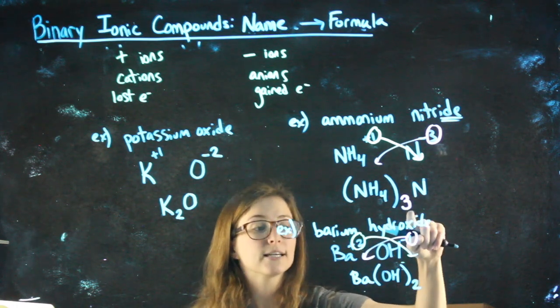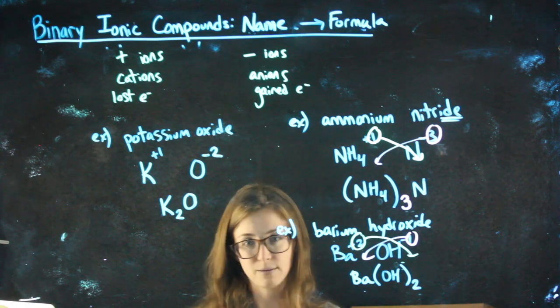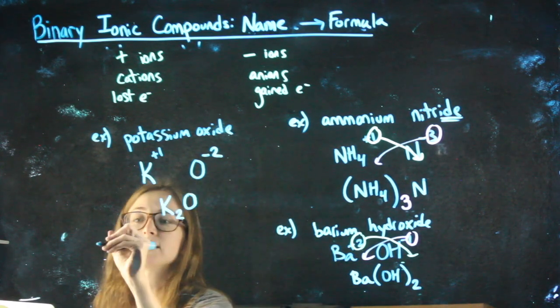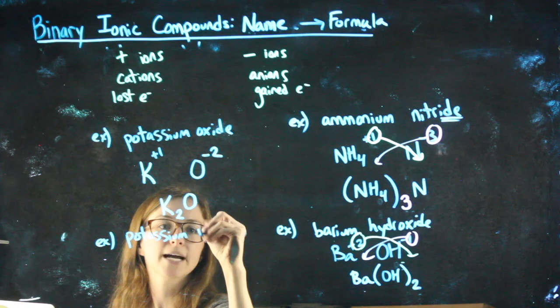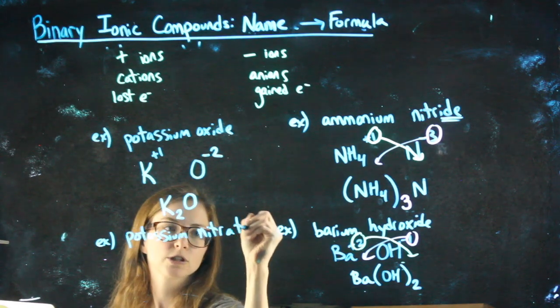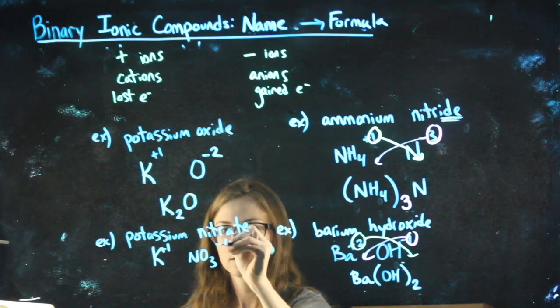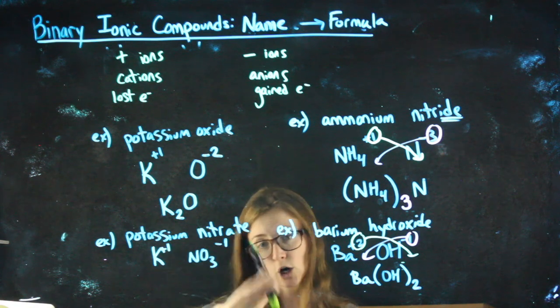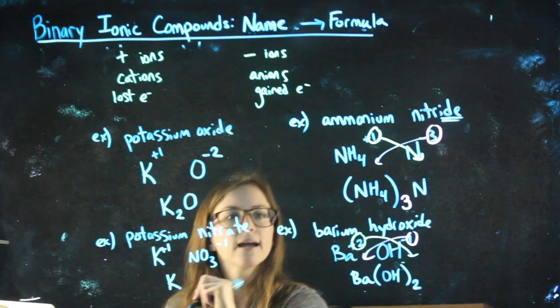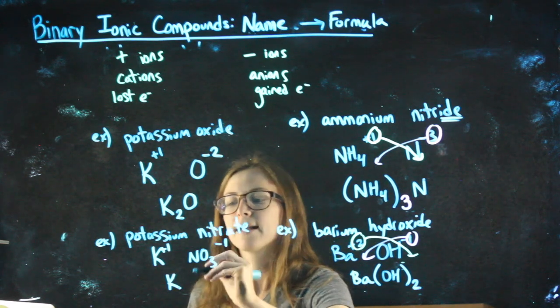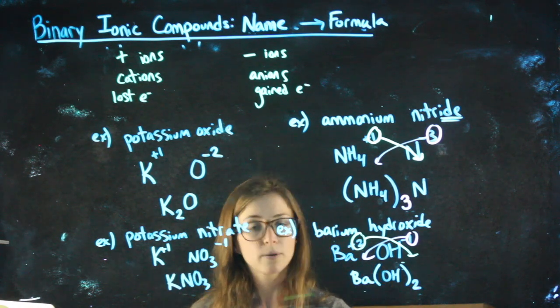If you aren't giving an additional subscript to the polyatomic ion, then you wouldn't need parentheses. In fact, then it would be weird to do parentheses. Let's do potassium nitrate actually. Potassium's a plus one. Nitrate's a minus one. So you can crisscross if you want, but know that the same charge are just going to cancel out. I only need one of each. KNO3. That's one potassium and one nitrate group. I don't need parentheses.